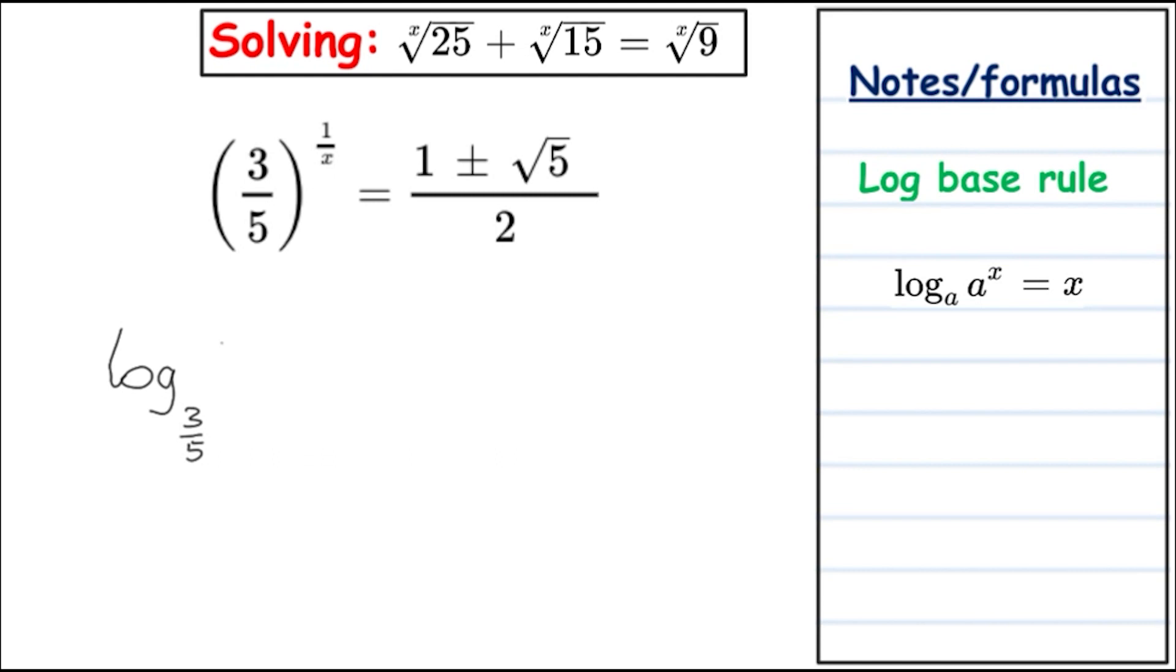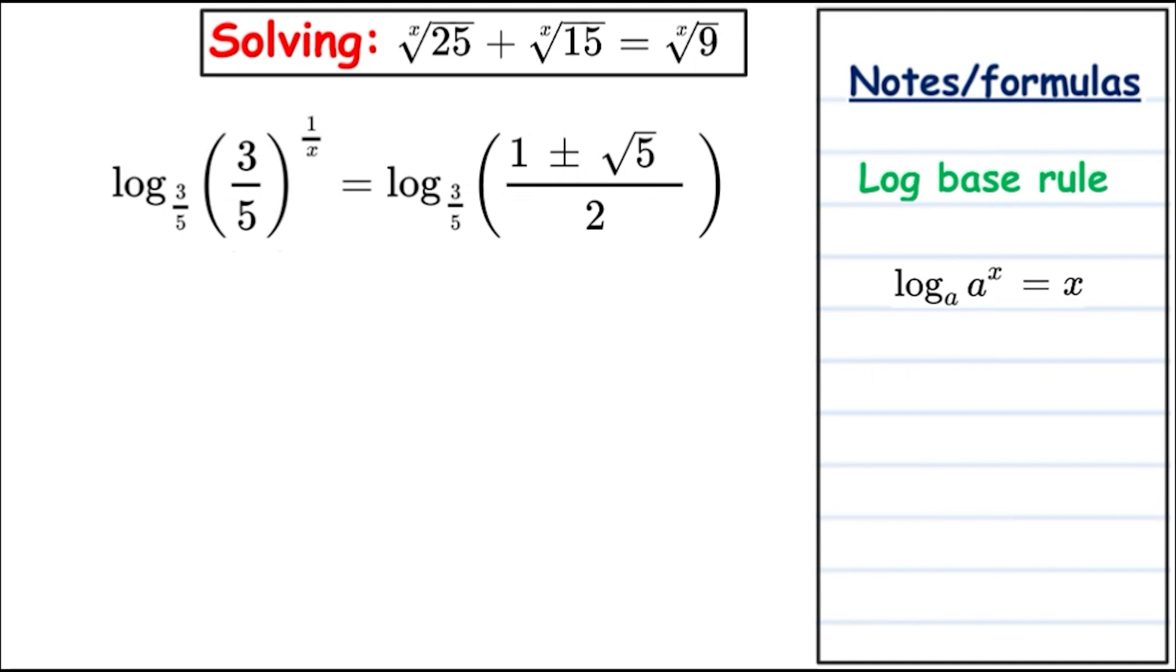This is going to engineer a cancellation and bring down the power: log to the base 3 over 5 of the golden ratio. We're going to leave it in this form for now so we can see both options. They're going to cancel with this rule, and now we're going to get 1 over x is equal to log to base 3 over 5 of the golden ratio, both signs at the moment.